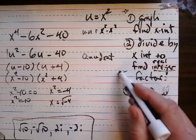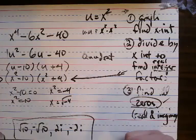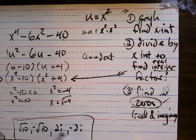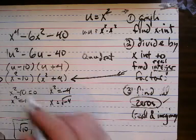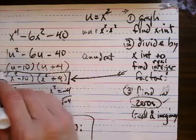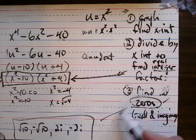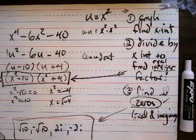Found all the real answers, found the integer factors. Because these square root of 10 answers are nasty little decimals that go on forever and ever, and the imaginary ones aren't real numbers. These are what I'm looking for whenever I say I want integer factors. That's the answer: find all the zeros.